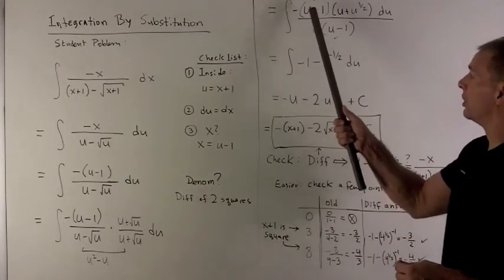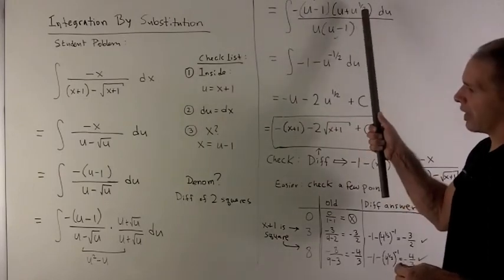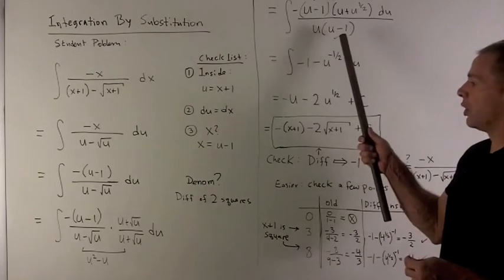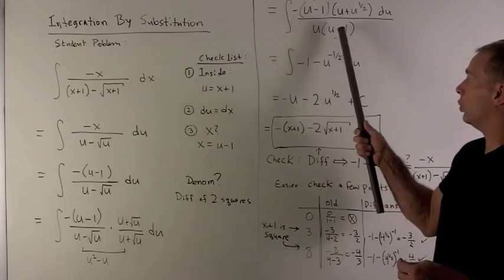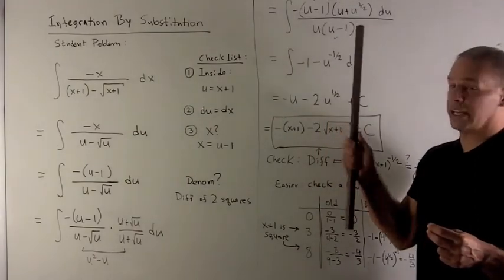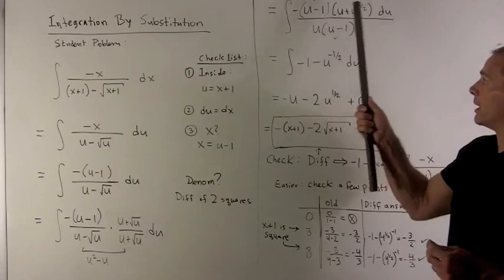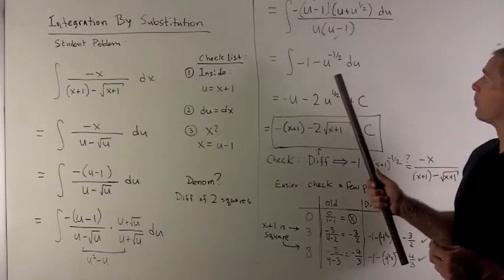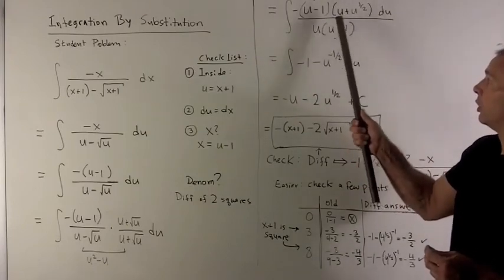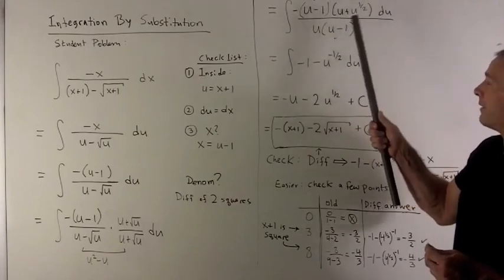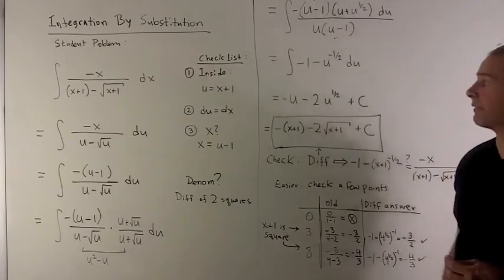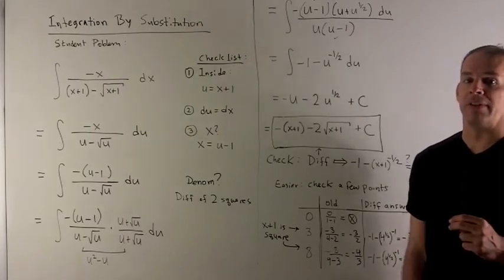Cleaning this up, I'm going to have minus u minus 1 times u plus u to the half — writing the square root as u to the half because that'll be convenient for integration — all over u squared minus u, which I factor as u times u minus 1. Since I didn't distribute the minus sign through, the u minus 1 terms cancel nicely. Distributing the minus sign through the second term leaves me with minus 1 minus u to the minus one-half. Dividing by u: u over u is 1, and u to the one-half over u is u to the minus one-half.